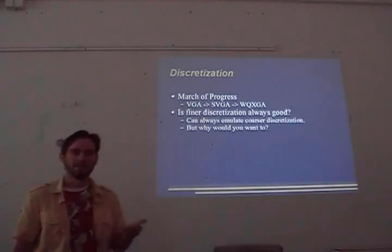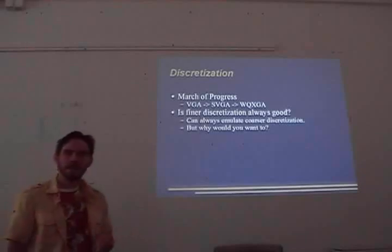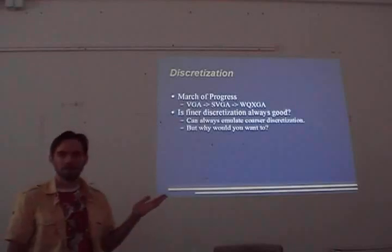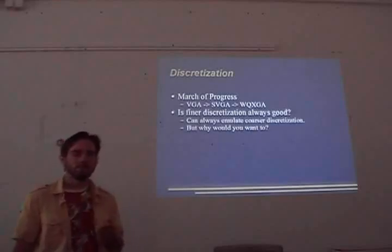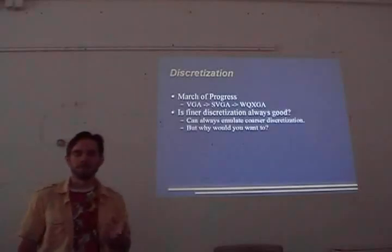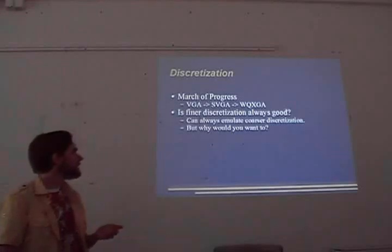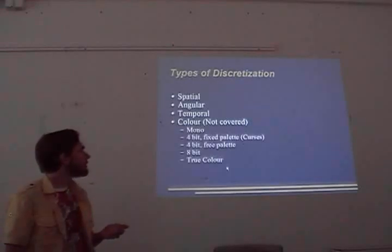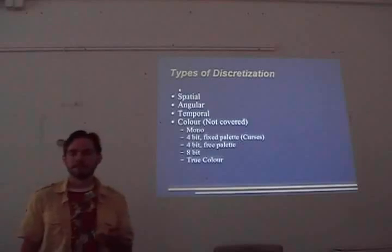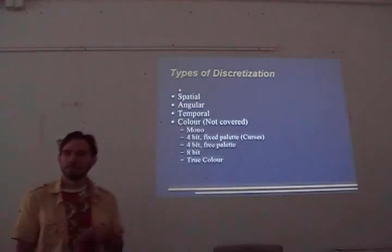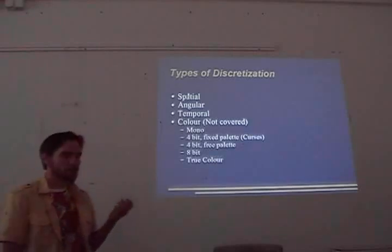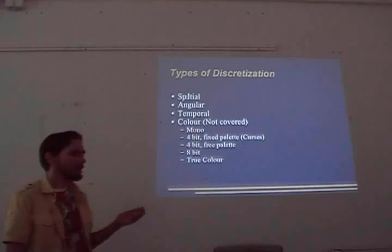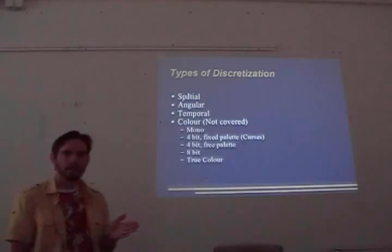The hardware manufacturers will tell us it is because they want to sell us the next generation. And you can always emulate low resolution solutions on a high resolution display — you just double, triple, quadruple pixels. But the question we should address is: is there any reason why you would choose to use a lower resolution than you have to? I'm going to look at this in three different types of discretization: spatial division, angular division, and temporal division — dividing up time.